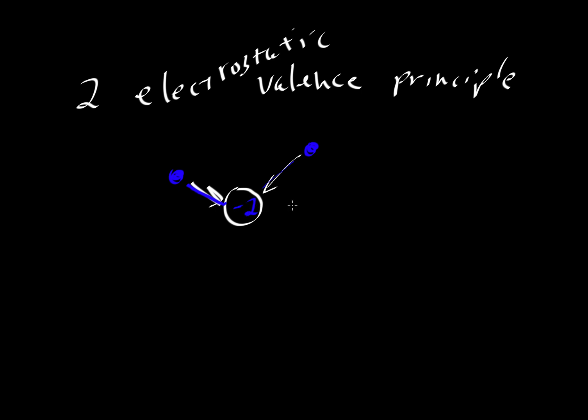So oxygen is typically minus two. The most stable state is where the sum of the charges that reach that anion are also adding up to two, of course positive, to balance the negative charge on the anion.